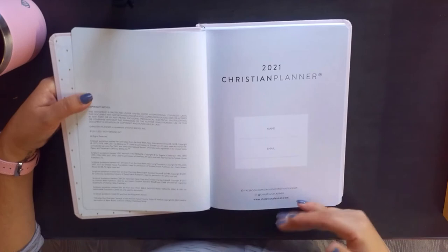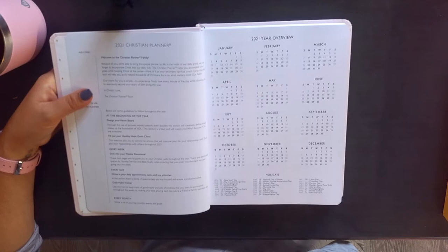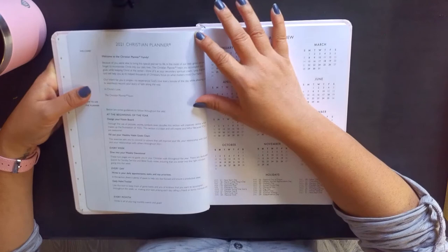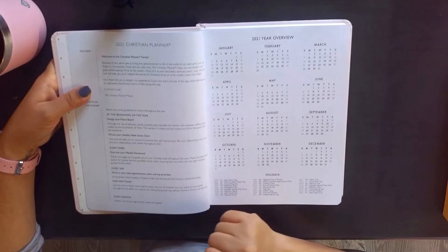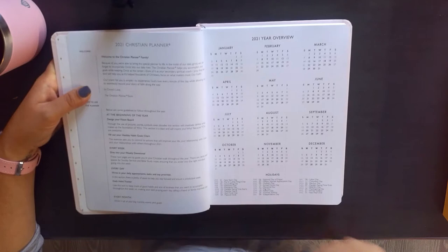It's got a Facebook group where they show different ways people are using it, and then their Instagram and then their website. Here it just has a welcome to the Christian Planner family. It has some guidelines: at the beginning of the year design your vision board, fill out your healthy habits goal, dive into your weekly devotional. Every week, every day write in your daily appointments, tasks and top priorities and daily habit tracker. And then every month write in all your big monthly events and goals.